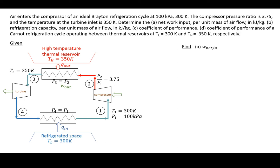I want to find the net work input and that's in terms of kilojoules per kilogram. So that's little w_net_in, and the refrigeration capacity per unit mass of air flow. So that's in kilojoules per kilogram.